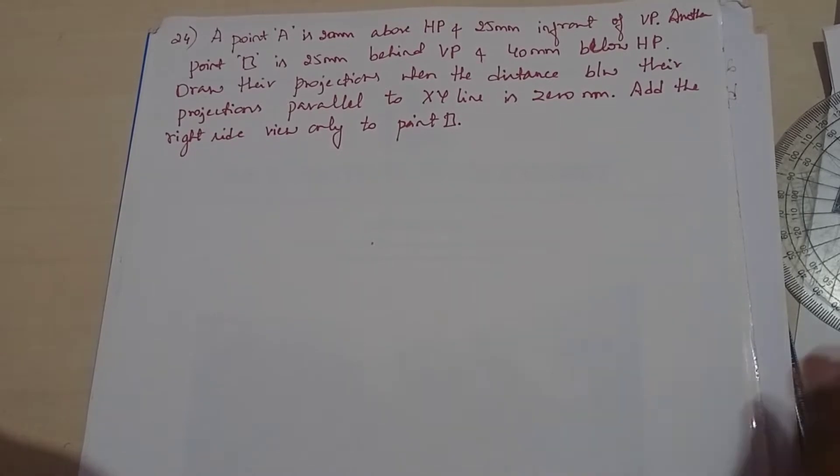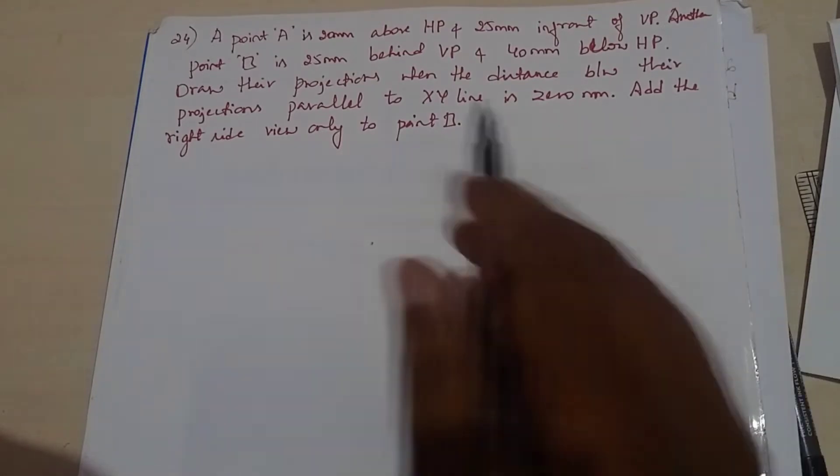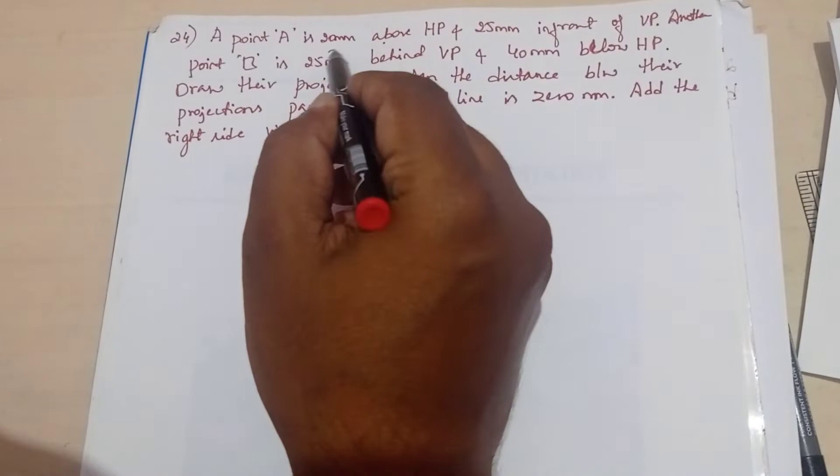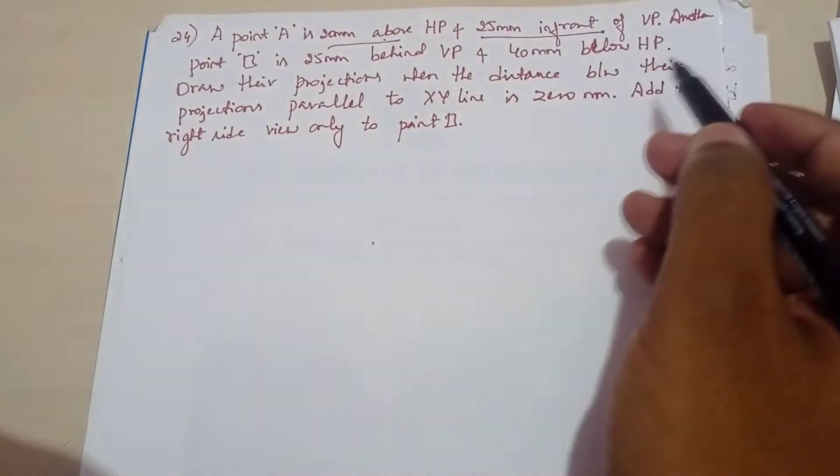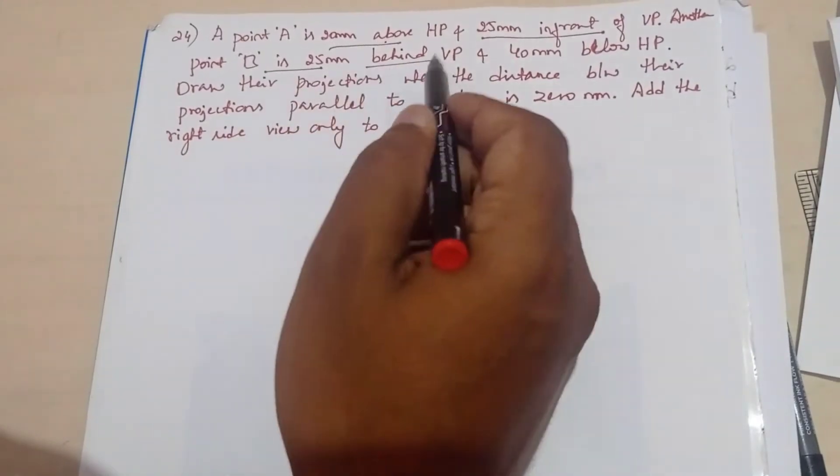Welcome to Engineering Visualization Channel. As we are discussing the problems on points, the next type of problem you have to see here: A point A is 20 mm above HP and 25 mm in front of VP, so it is lying in the first quadrant. Another point B is 25 mm behind VP.